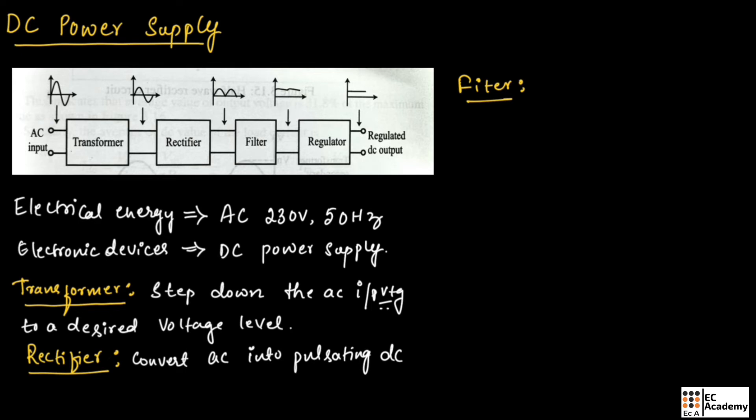The function of filter is to remove AC component from the output of rectifier. The AC component that is present in the rectified output is known as ripple.